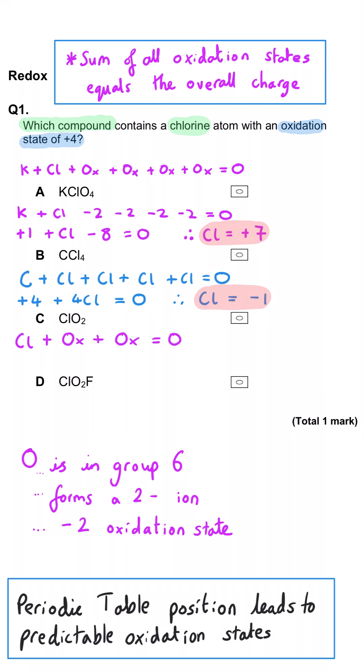In C, we've got 2 oxygens at minus 2 each, that's a total of minus 4, plus the chlorine equals 0. So chlorine here is plus 4.